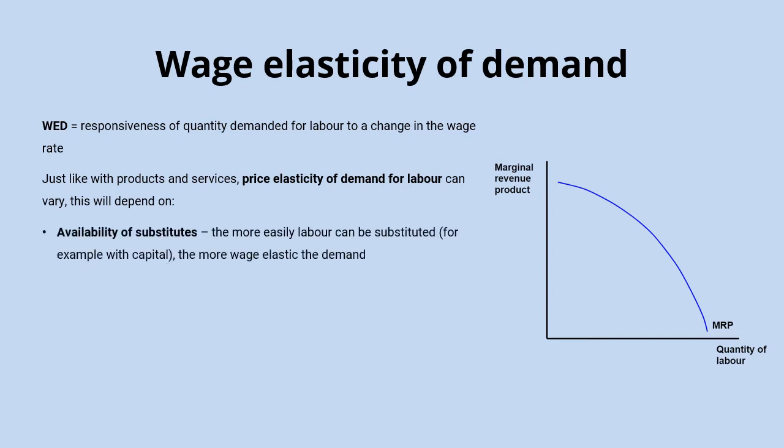The first factor is the availability of substitutes. In this case, substitutes would likely be capital. The more easily labour can be substituted with capital, the more wage elastic the demand for labour is likely to be. That's because an increase in wages would likely lead to a big decrease in the demand for labour if it's very easy to substitute that labour with capital and machinery — the firm will simply replace the workers with machinery rather than paying the higher wage.